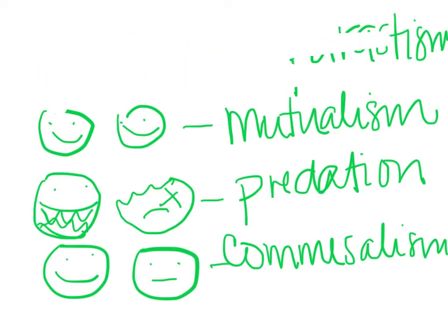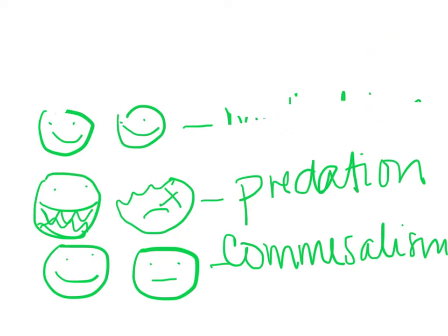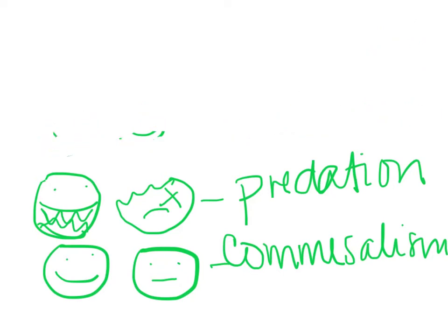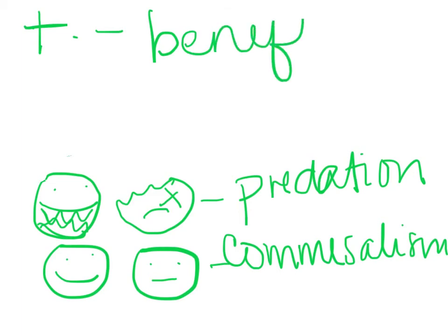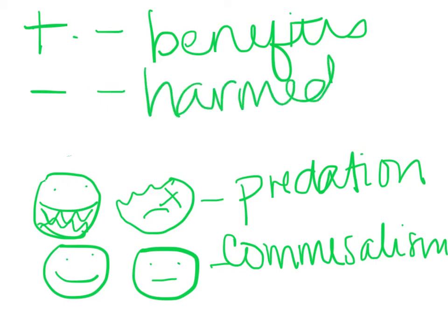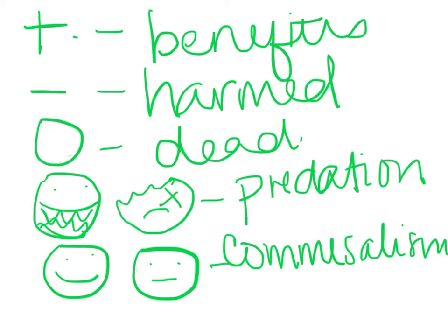Another way to represent symbiosis is with plus, minus, or zero symbols: a plus represents benefits, a minus represents harmed, and a zero represents dead or unaffected. Go ahead and do those two symbiosis sheets I've left you, and also get the ecology packet done. I'll see you when I get back — bye!